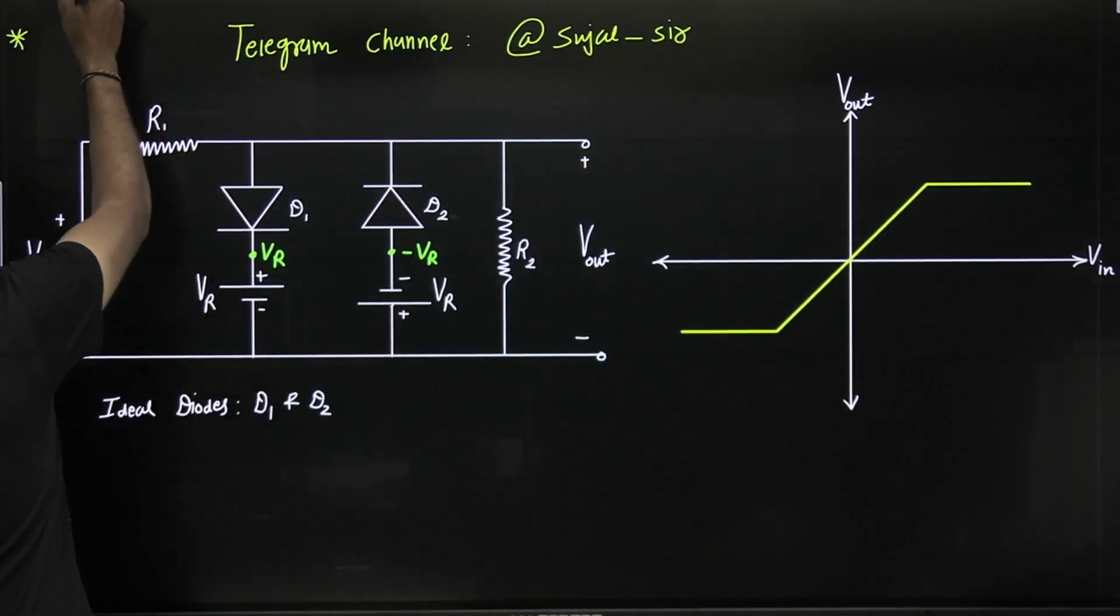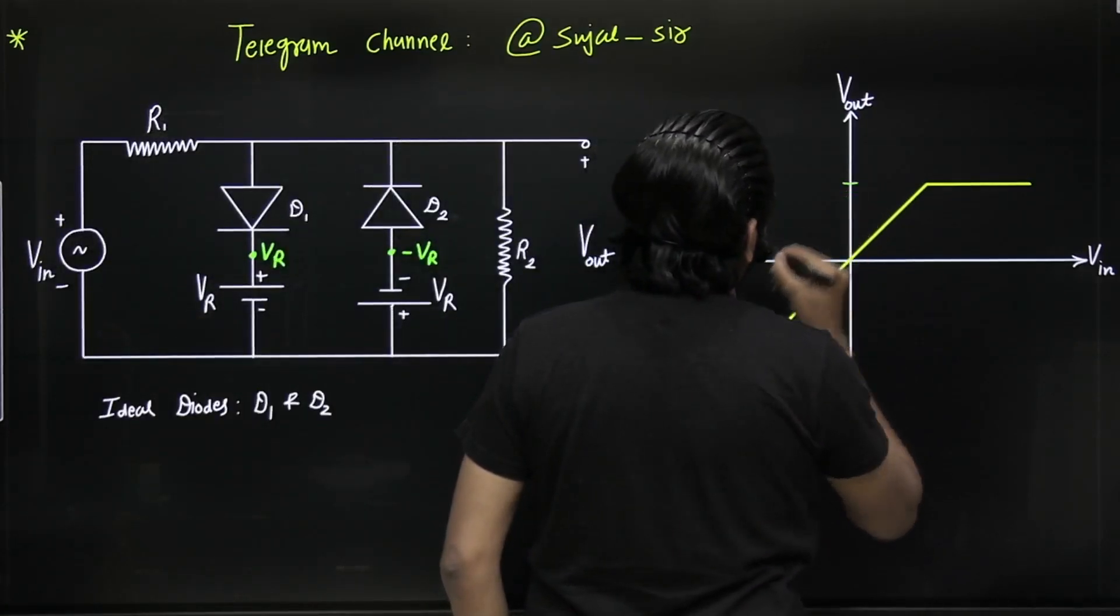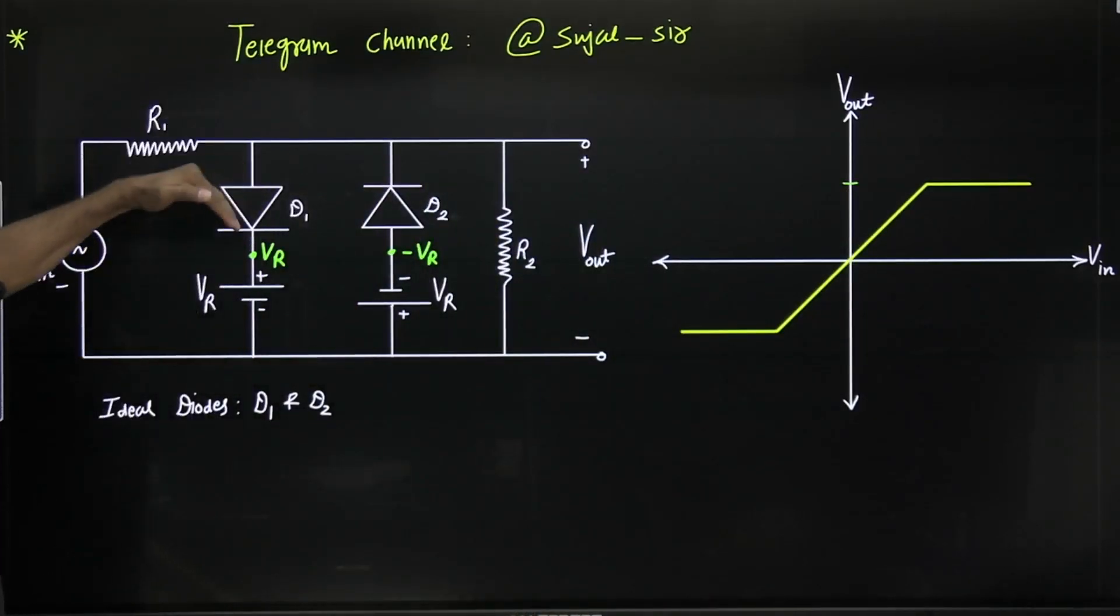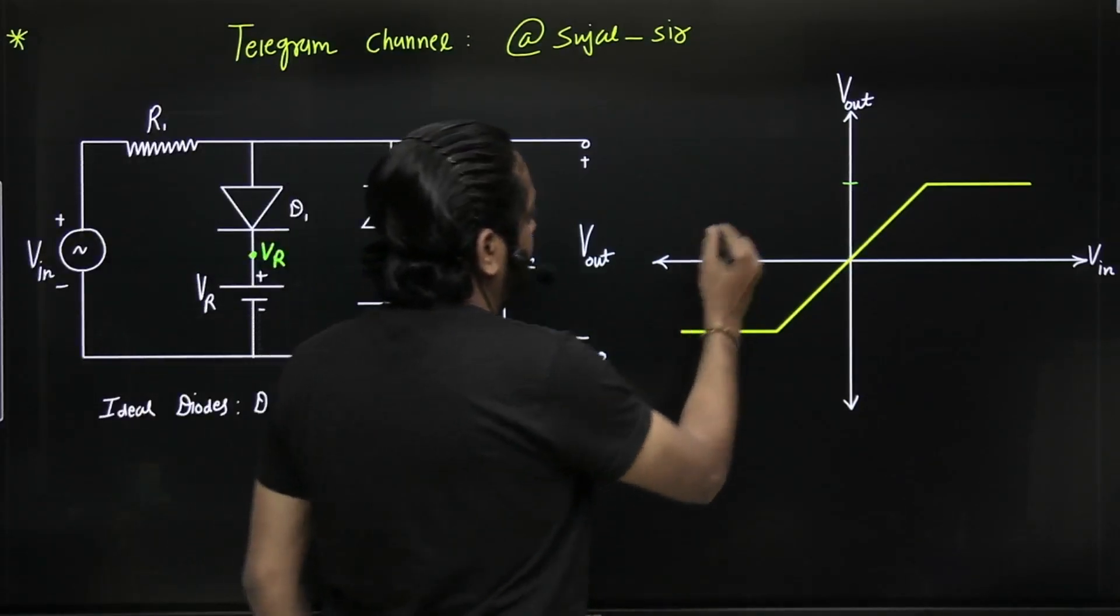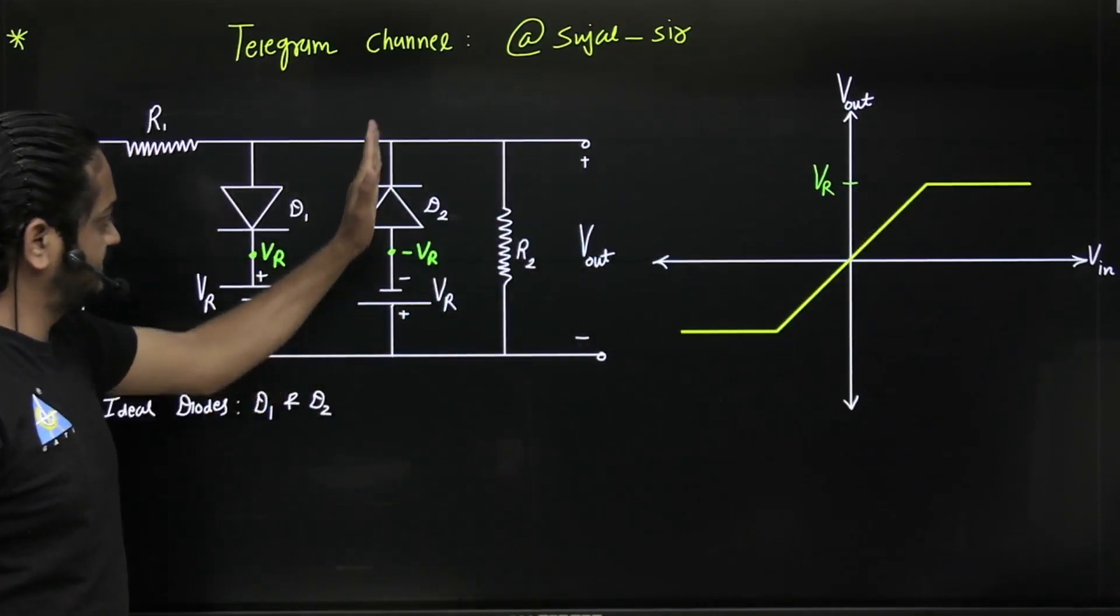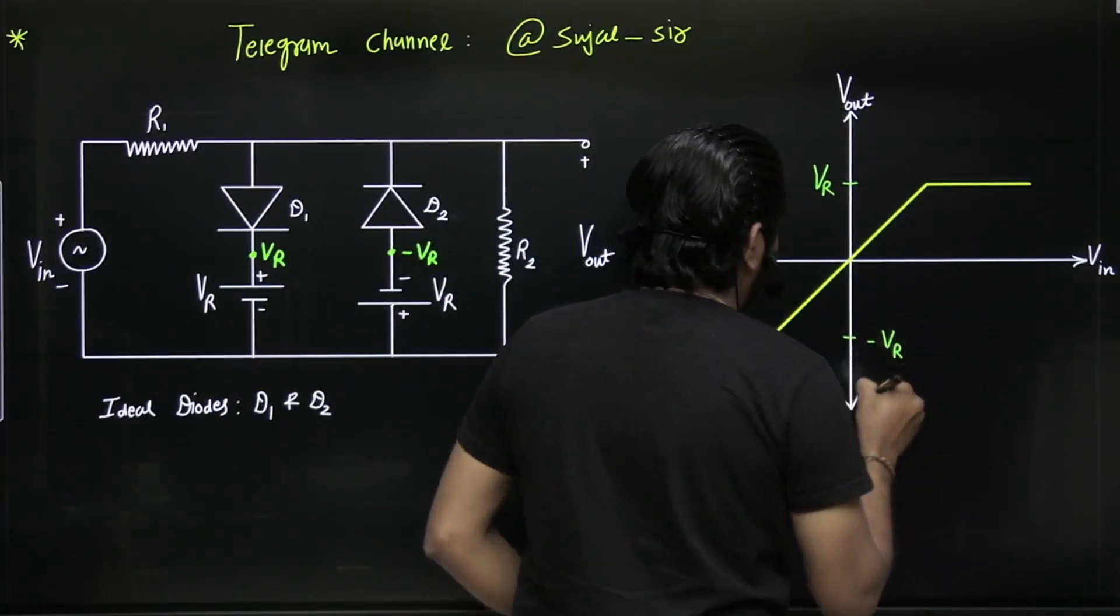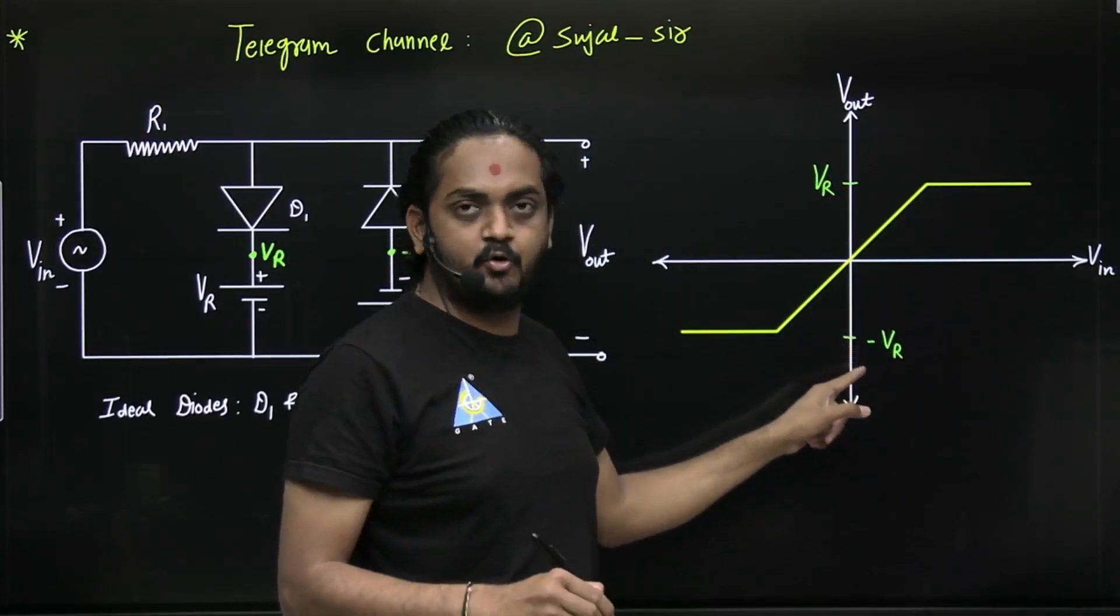Now see, this is the characteristic. What about the y-axis value? Here, downward direction diode is plus Vr. Upward direction diode is minus Vr. Now what I am saying is both values can be positive, both values can be negative, or one positive and one negative.